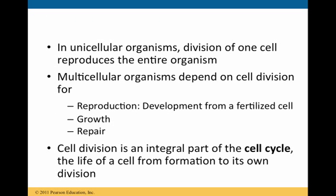Multicellular and unicellular organisms differ in terms of cell division. A unicellular organism can divide and reproduce the entire organism — the division of one cell will produce the entire organism. Multicellular organisms, on the other hand, depend on cell division for reproduction, for growth, and also for repair, because cell division is such an integral part of the cell cycle.